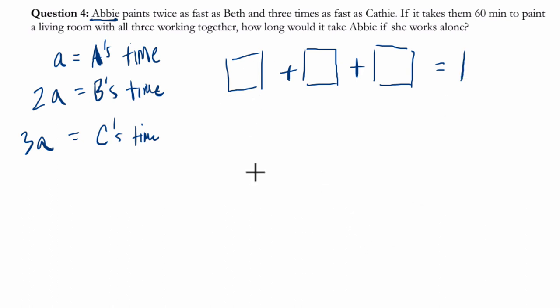Altogether, they each paint some fraction of the room. Now, the way I thought about their fraction of the room that they paint is to say, okay, well, if this is their time, then their rate is the total of the room, which is one, divided by their time. And that's also the fraction of the room that they will paint.